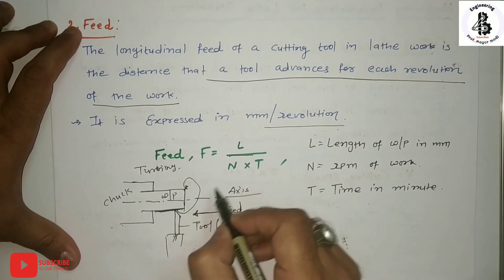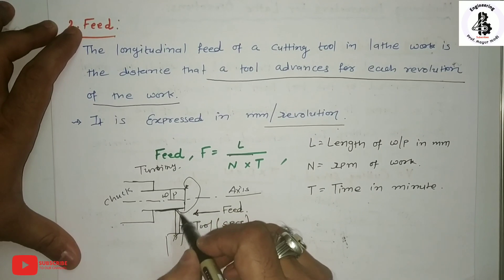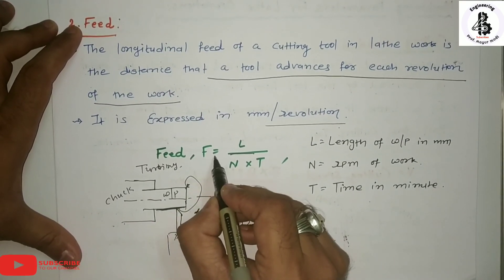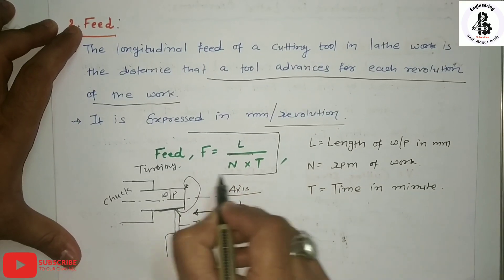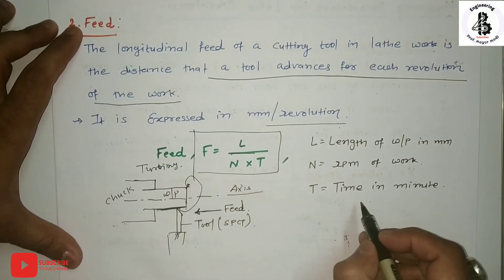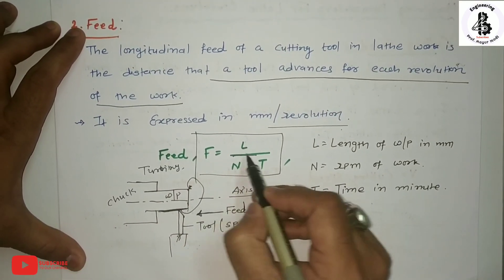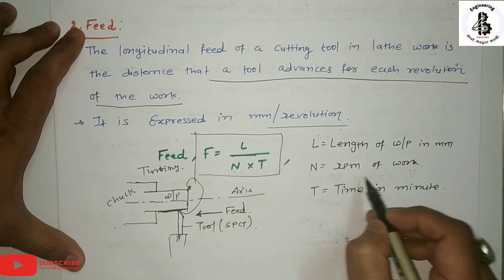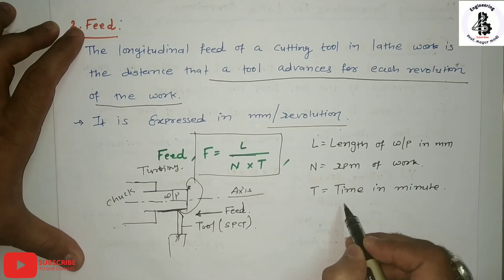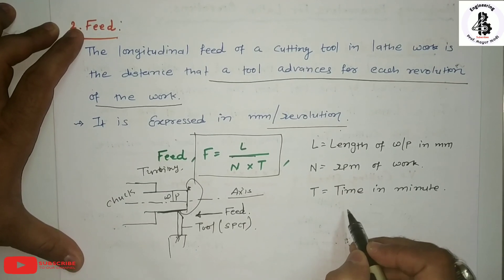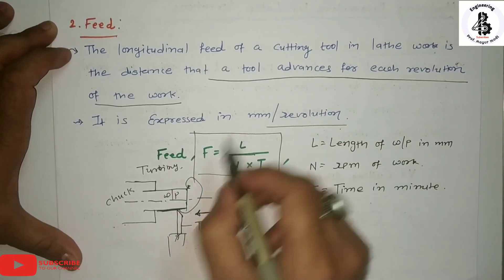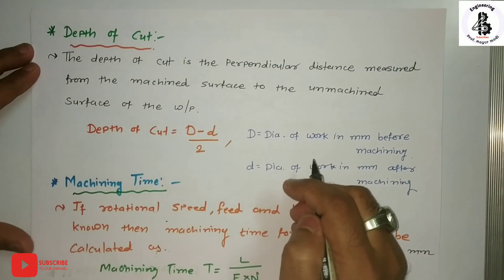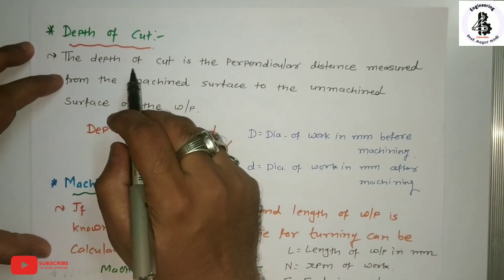Feed is equal to L / (N × t), where L stands for the length of the workpiece in mm, N stands for the RPM of the workpiece, and t stands for the time in minutes. That is all about feed in the case of the lathe machine.